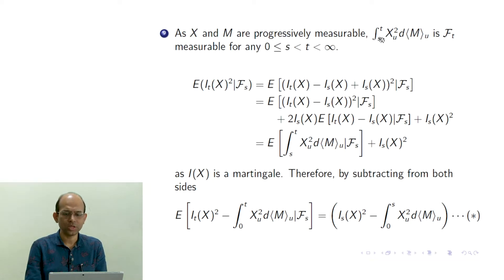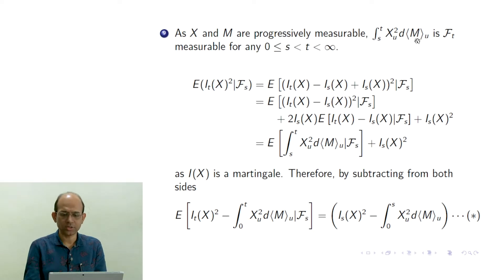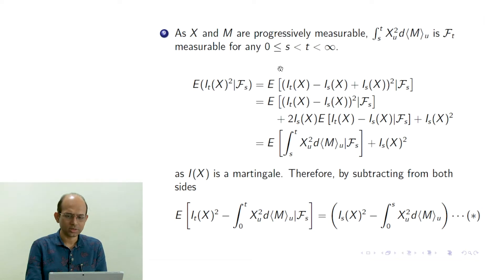If we consider this integration with respect to the quadratic variation of M, since M is progressively measurable the quadratic variation of M is also progressively measurable. Therefore, the integration from 0 to T of X_u squared d⟨M⟩_u is F_T measurable, where F_T is the sigma algebra at time t.